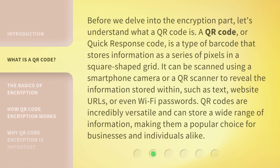Before we delve into the encryption part, let's understand what a QR code is. A QR code, or quick response code, is a type of barcode that stores information as a series of pixels in a square-shaped grid. It can be scanned using a smartphone camera or a QR scanner to reveal the information stored within, such as text, website URLs, or even Wi-Fi passwords. QR codes are incredibly versatile and can store a wide range of information, making them a popular choice for businesses and individuals alike.